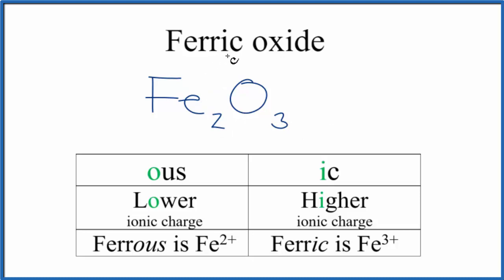Remember, we said since it was 'ic', we had 3+, and the oxygen here is 2-. Three times 2- is 6-, and two times 3+ is 6+. These two numbers add up to zero.